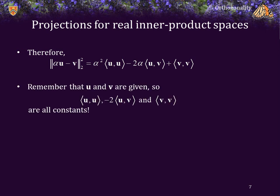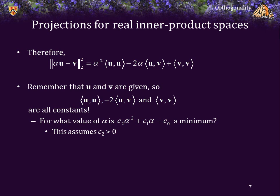Since u and v are given, the quantities ⟨u, u⟩, −2⟨u, v⟩, and ⟨v, v⟩ are just constants, so what we really have is a polynomial in α. For this polynomial to have a minimum it must be concave up, so the coefficient of α² must be positive. The coefficient of α² is ‖u‖², which is strictly greater than zero as long as u is not the zero vector. To find the minimum, differentiate with respect to α, equate to zero, and solve.